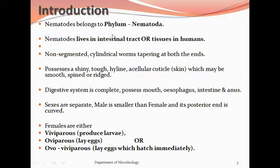As a small introduction, nematodes belong to the phylum Nematoda. They live in the intestinal tract or in tissues of humans. The name nematodes is derived from a word meaning thread-like. They can also be found as free-living forms in the soil and water. About 500,000 species of nematodes exist. They have a non-segmented and cylindrical body with tapering ends.